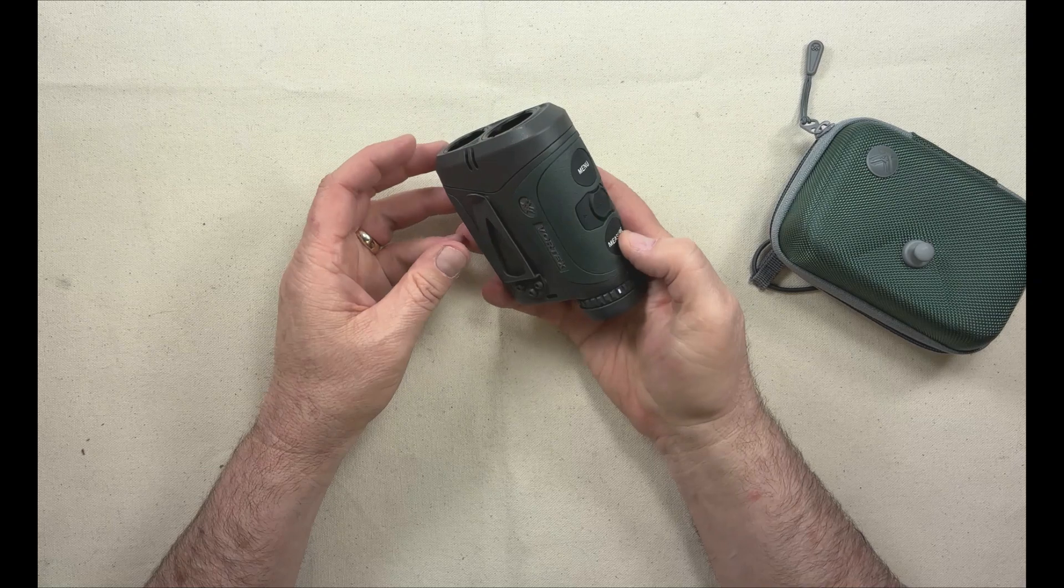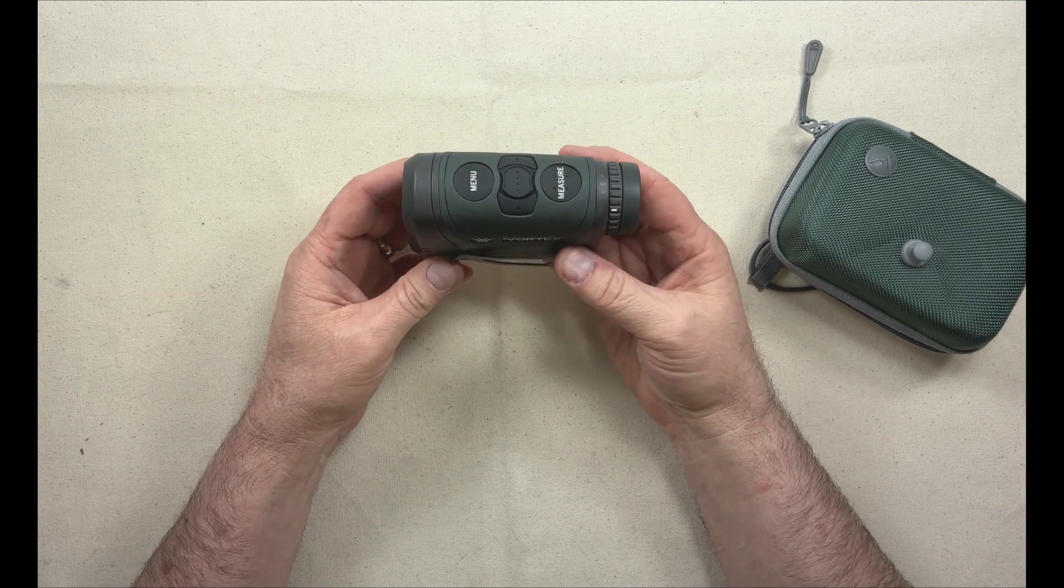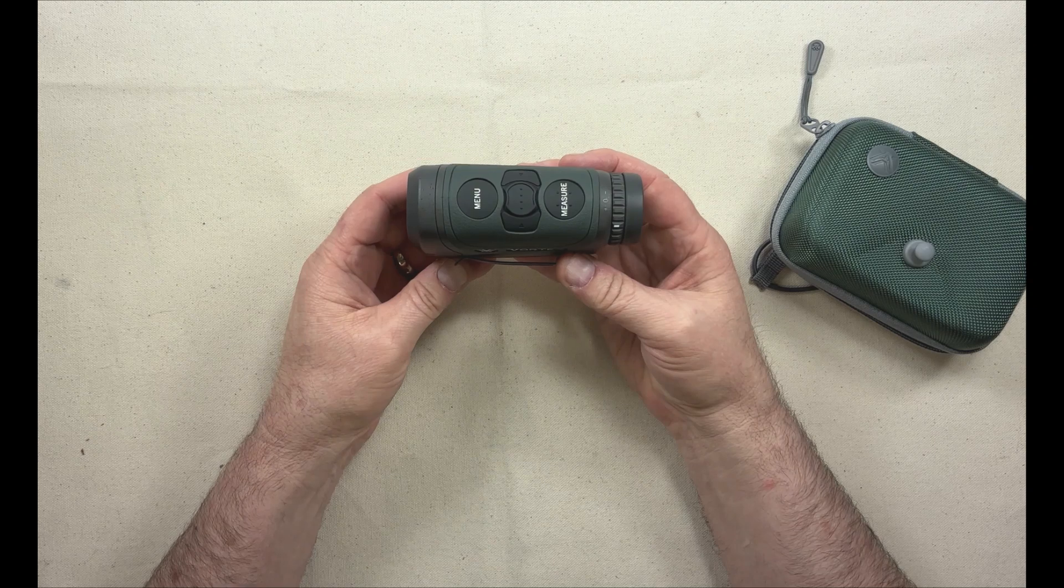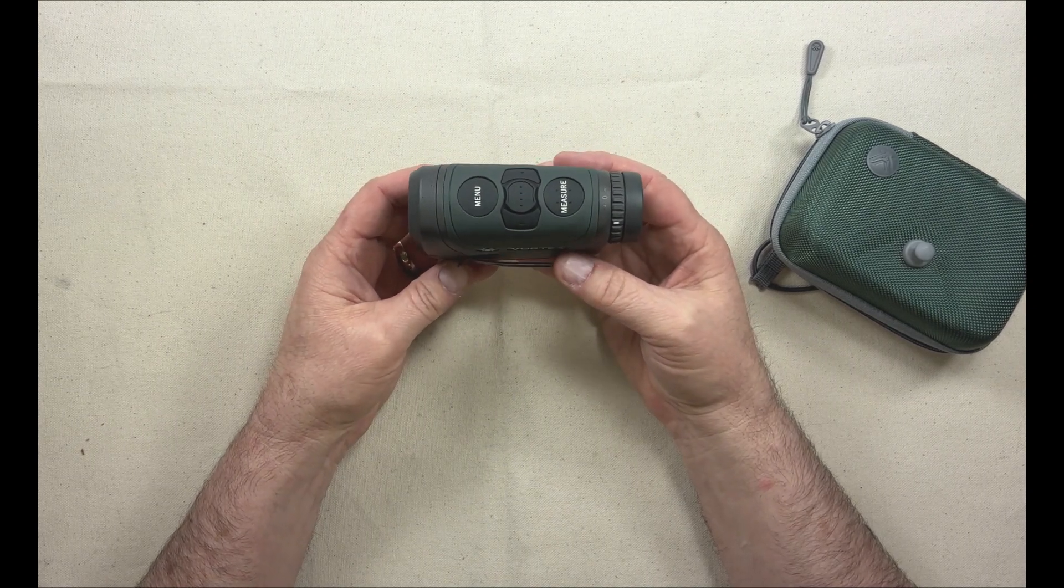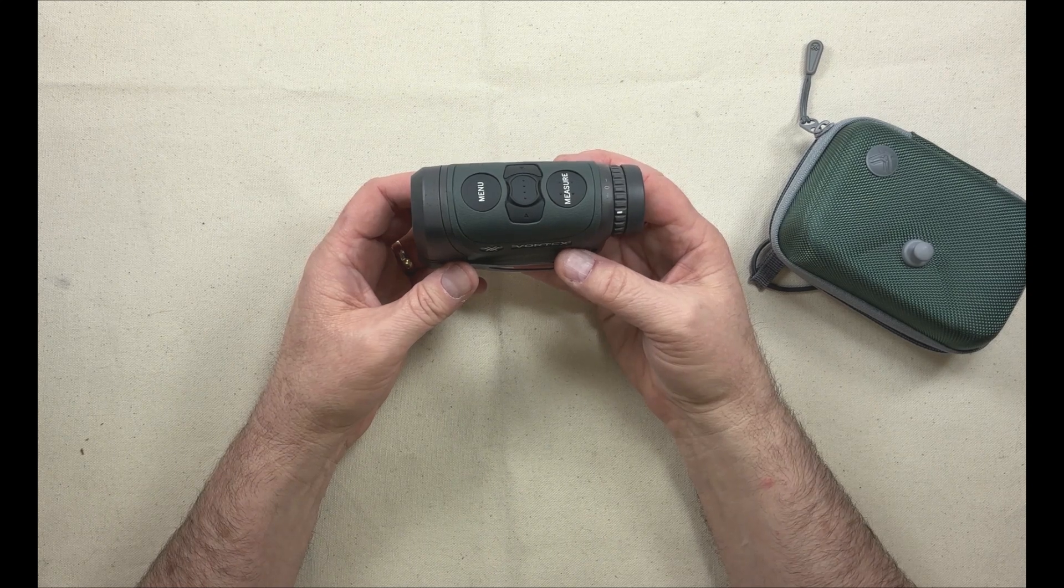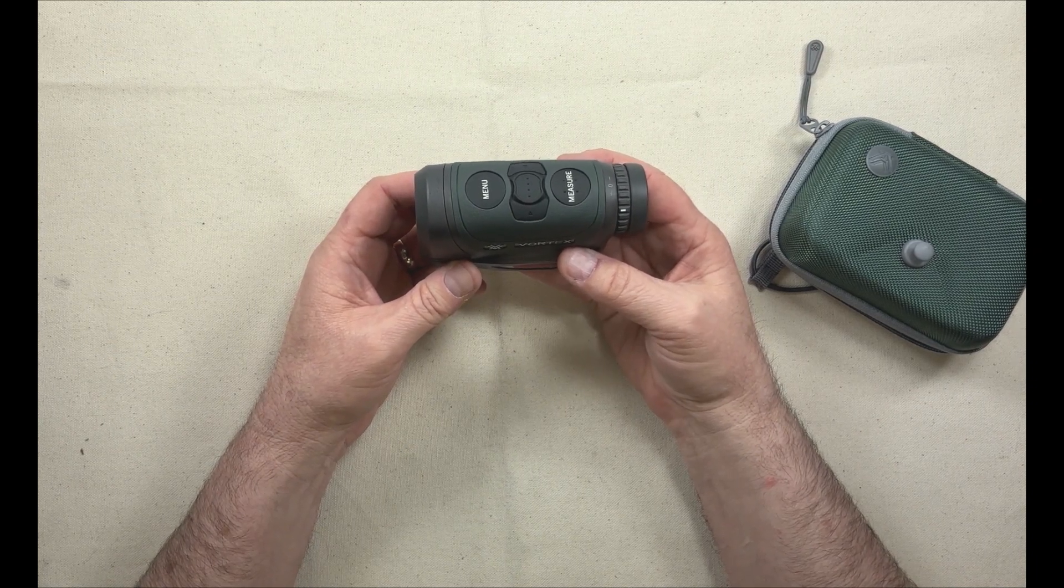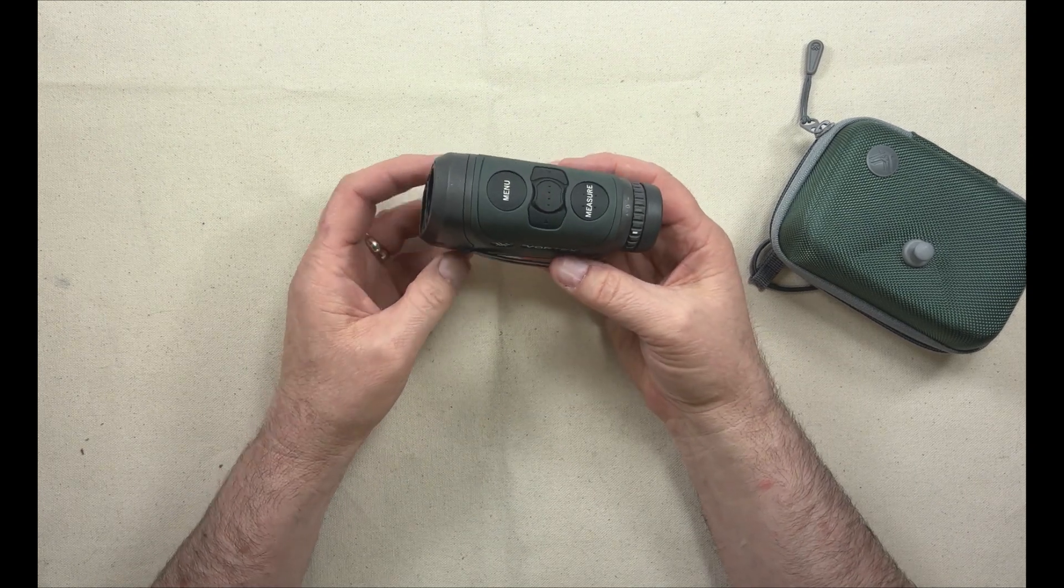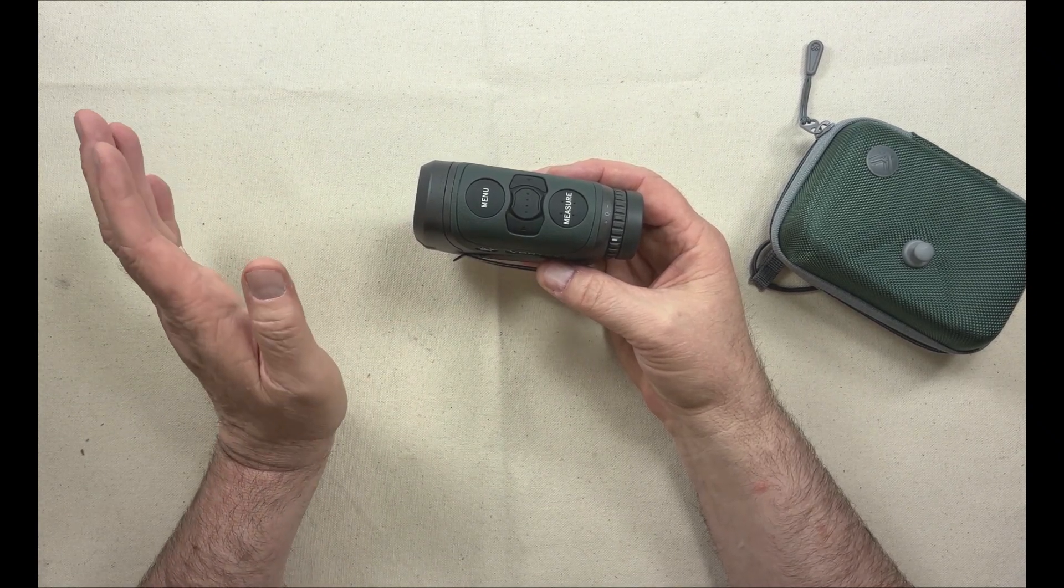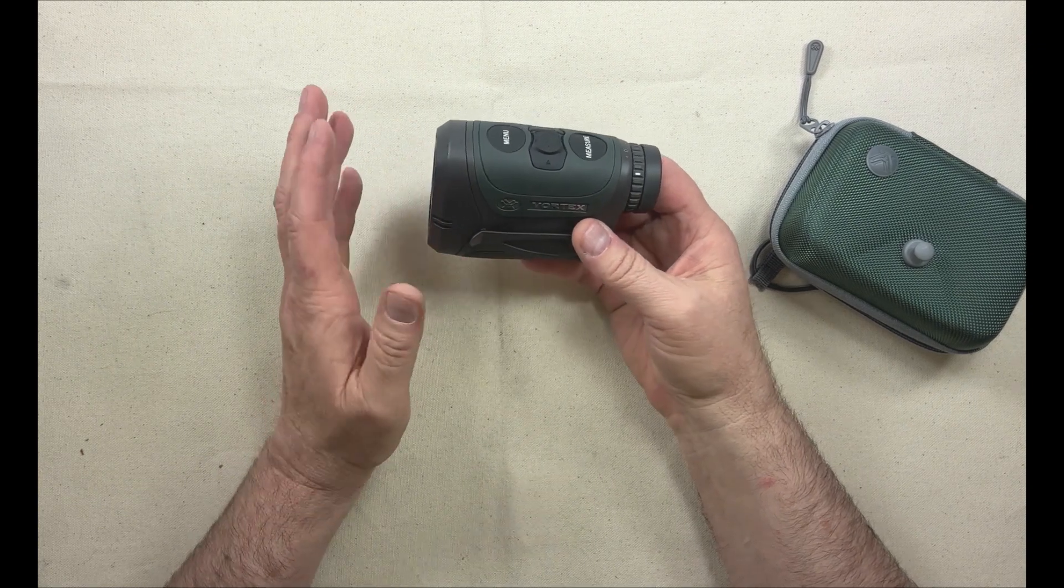Just going over the features on this. So this unit has a maximum effective laser range difference of 4,000 yards, but that's on highly reflective objects. For deer-sized objects, it's more like 2,000 to 2,200 yards, and then for trees and more narrow items, it's around 2,500 yards. It's not 4,000 yards where you can range a mule deer at 4,000 yards. It'll do about 2,200 yards for a deer-sized target.